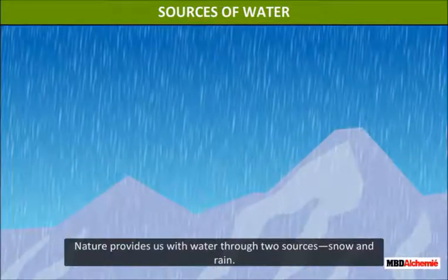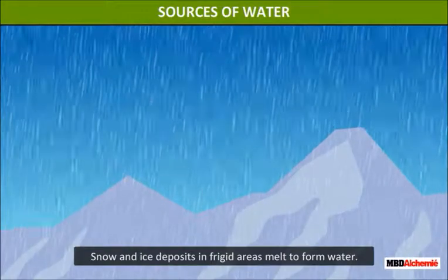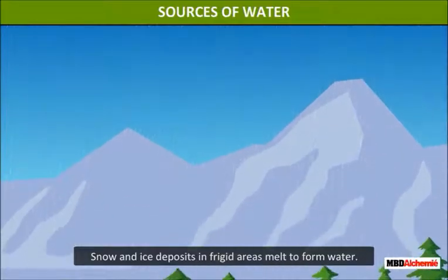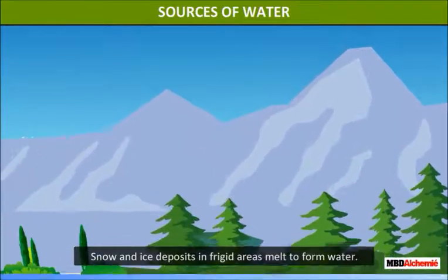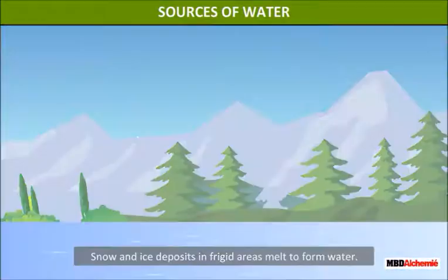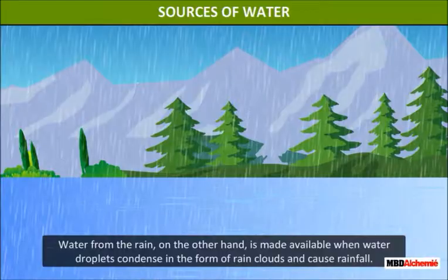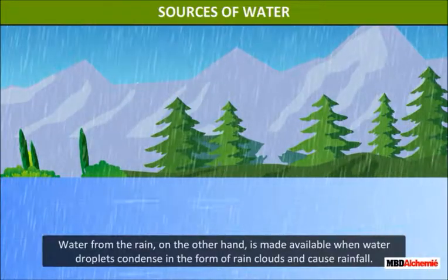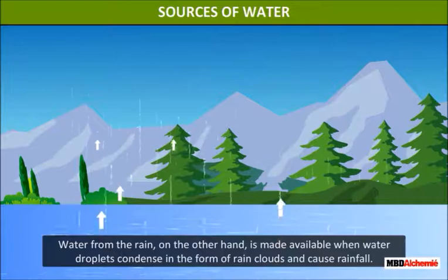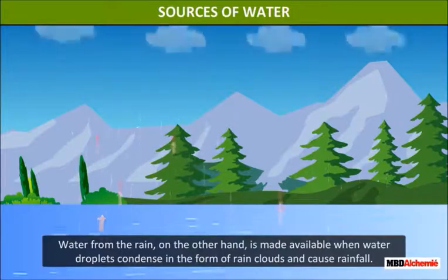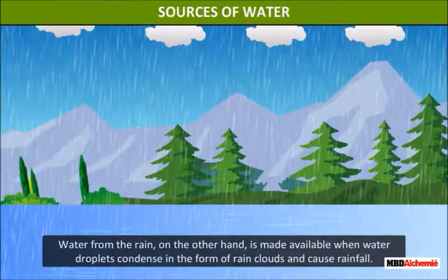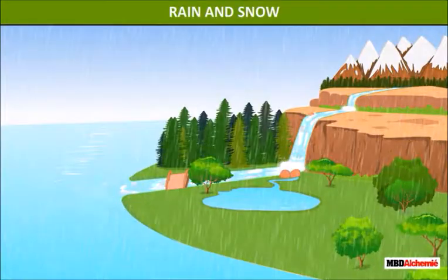Snow and ice deposits in frigid areas melt to form water. Water from rain, on the other hand, is made available when water droplets condense in the form of rain clouds and cause rainfall.